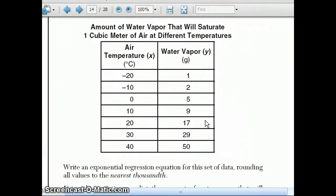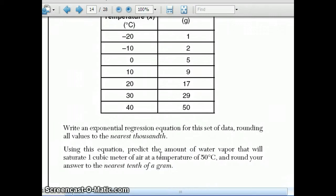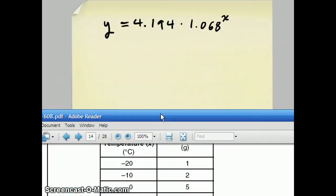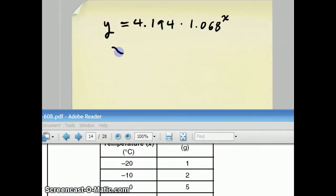Now the next thing they ask you to do is to use this equation to predict the amount of water that will saturate one cubic meter of air at 50 degrees Celsius. So they're telling you to plug x equals 50 into this equation. They want to know what would the y value be then.